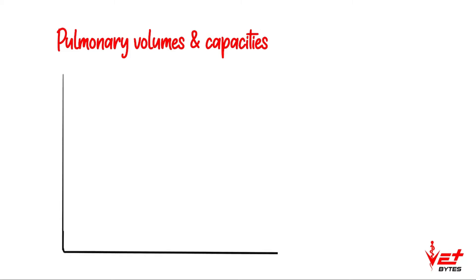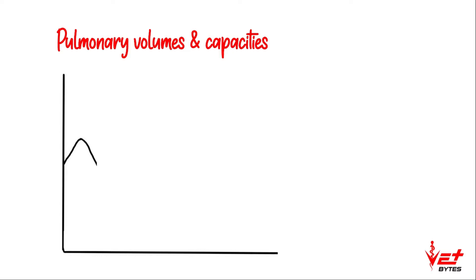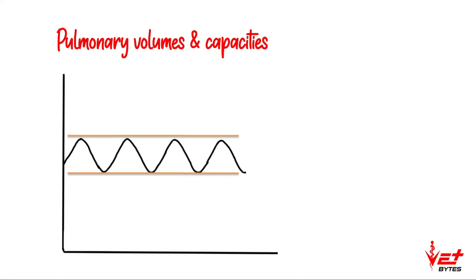Lung volumes can be studied using a graph drawn of lung volume against time. In normal quiet respiration, during inspiration the volume of the lung increases, so the curve moves upward; followed by expiration, the volume decreases, so the curve moves downward. This respiratory cycle of increases and decreases continues. The volume of air breathed in and out during a respiratory cycle is referred to as tidal volume.